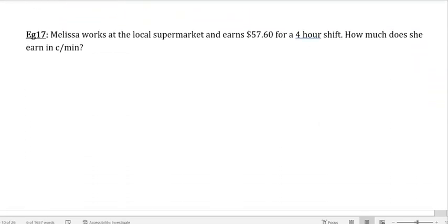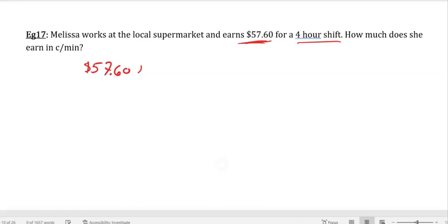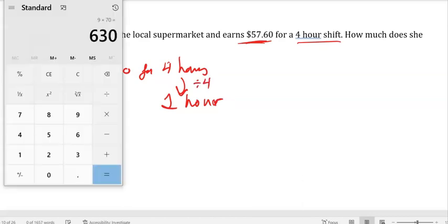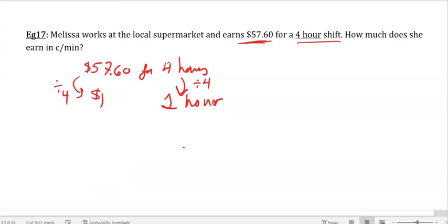Finally, Melissa works at a local supermarket, and she earns $57.60 for a 4-hour shift. That's the first part. We'll do that first. So 57.60 for 4 hours. What do we want? Let's start with this unit first. 1 hour. How many hours? How did I get there? I divide it by 4. 57.60 divided by 4. I don't need to put that 0 on there. It's 14.40, but I'm not done yet.